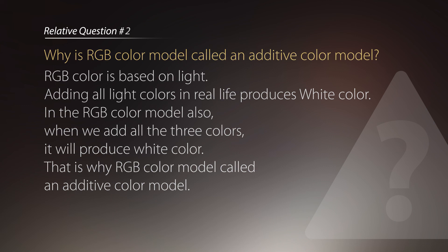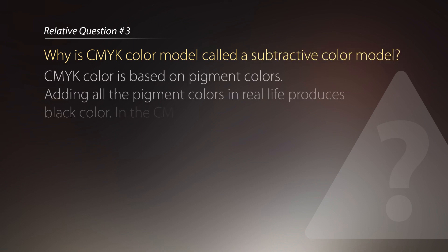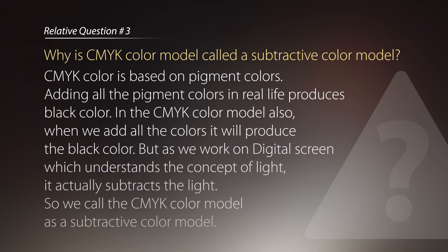And the last question is: why is the CMYK color model called a subtractive color model? CMYK color is based on pigment colors. Adding all pigment colors in real life produces black color. In the CMYK color model also, adding all colors produces black. But as we work on a digital screen which understands the concept of light, it actually subtracts the light. So we call the CMYK color model a subtractive color model.